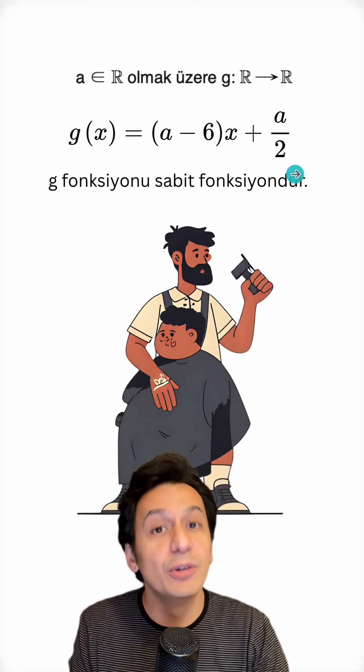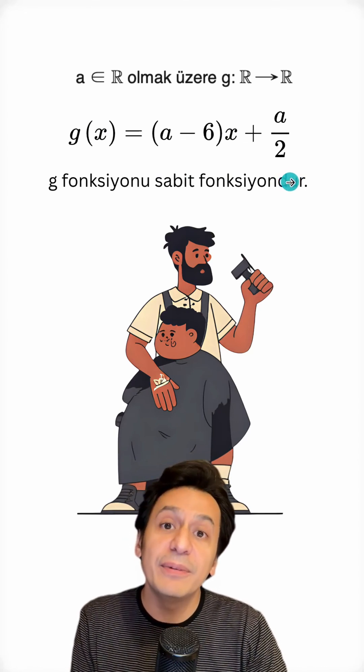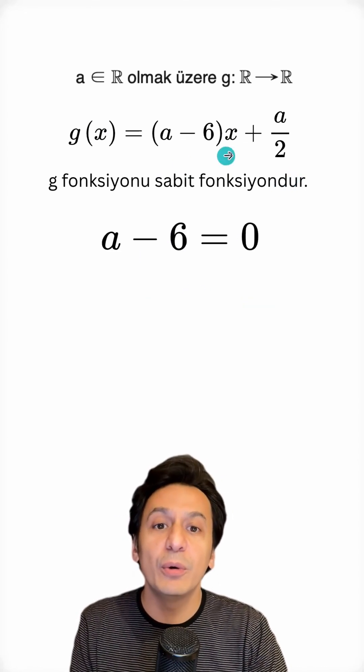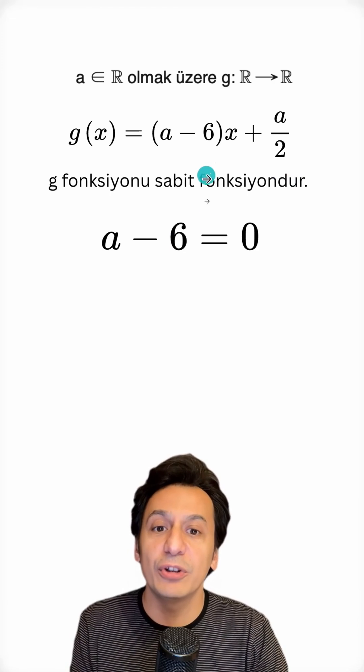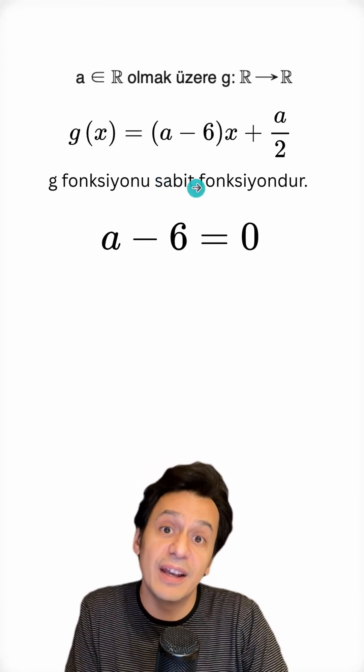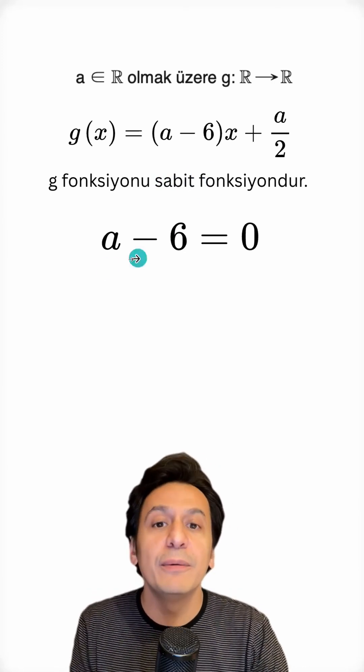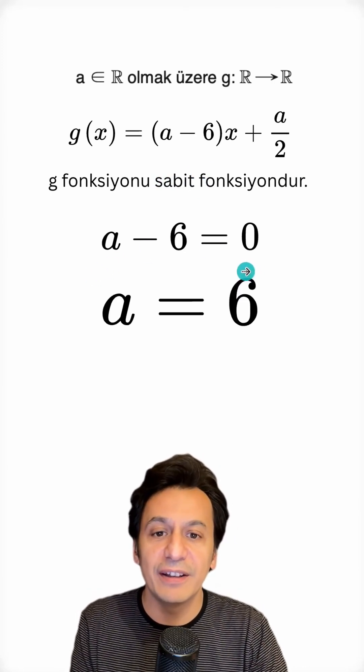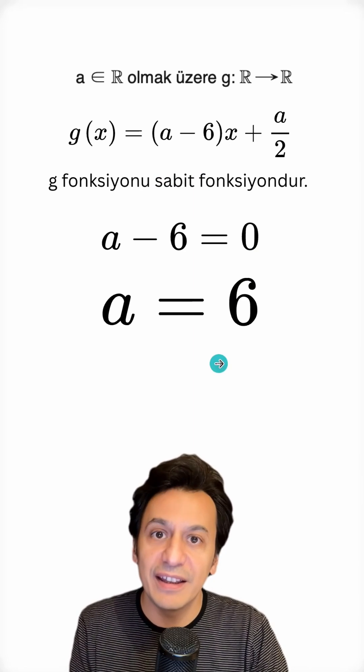And thus, the value of the expression will change, but it shouldn't change. This brings me to the following point. The coefficient of X here, which is a minus 6, must be equal to 0 so that I can get rid of this part and there is nothing dependent on X. So, from the equation a minus 6 equals 0, I find that a is 6.